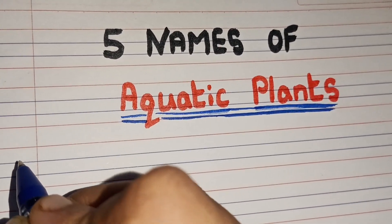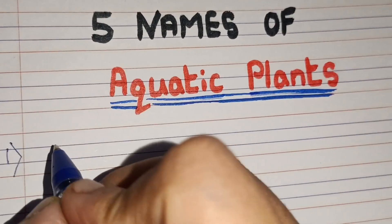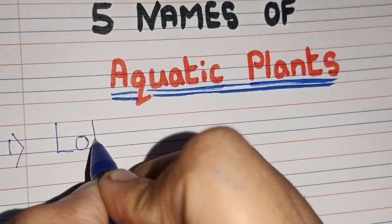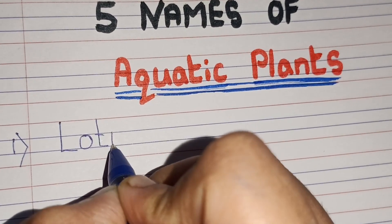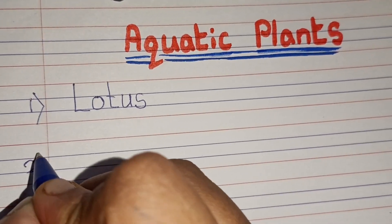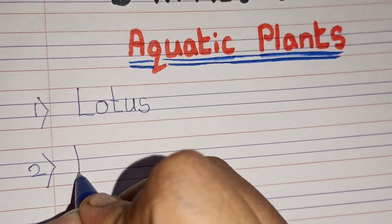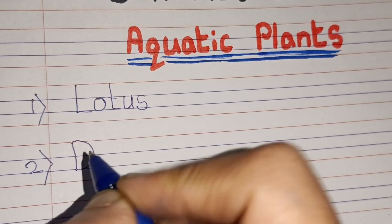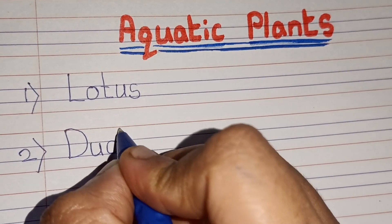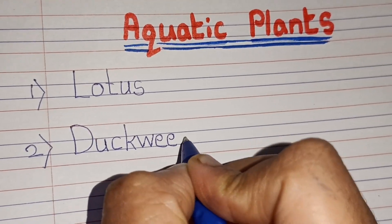Hello friends, welcome to Triyankush Learning Channel. Today we are going to learn five names of aquatic plants. So let's start. First: Lotus, L-O-T-U-S, Lotus. Second: Duckweed, D-U-C-K-W-E-E-D.